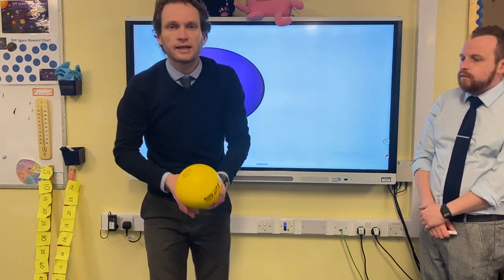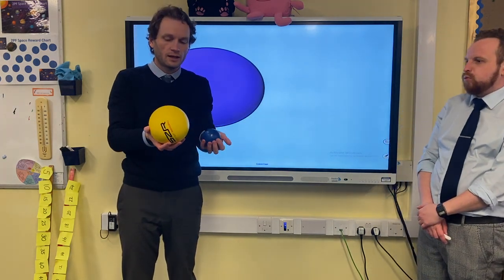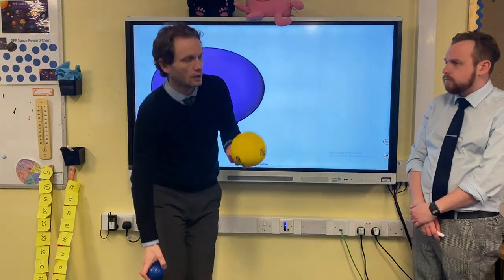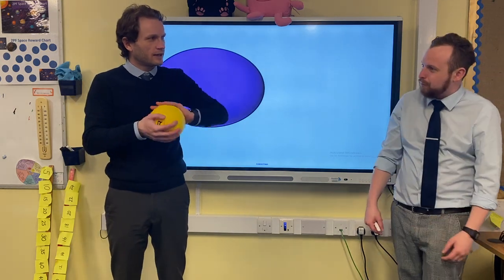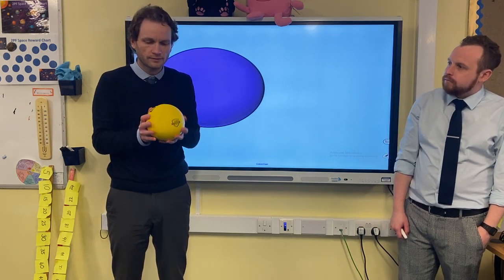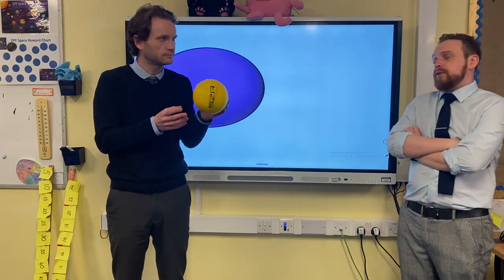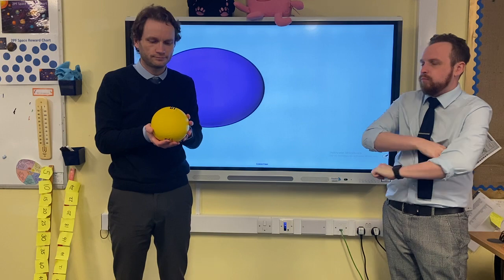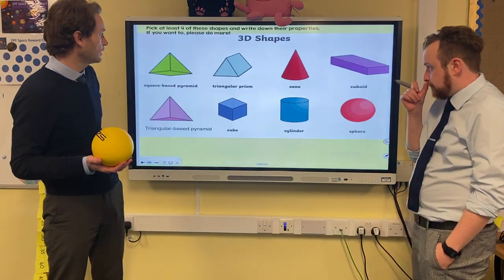The proper name for this shape is a sphere — same as a ball. How many corners does it have? No corners. How many edges? No edges. How many faces? Well, you could have an argument about this, but we'd say one — one curved face.